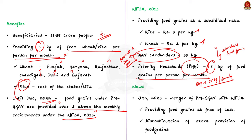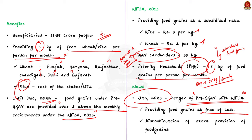Such families also received extra food grains under PMGKAY. This distribution arrangement existed until December 2022. However, in January 2023 the Central Government merged the PMGKAY with the NFSA. So now the AAY cardholders and Priority Households receive their entitlements free of cost — they don't need to pay even the subsidized rate. Note that the extra provision of food grains earlier granted under PMGKAY has been stopped, but they will receive their already existing entitlements free of cost. To sum up: under PMGKAY, the Central Government currently provides 35 kg of free food grains to AAY cardholders and 5 kg of free food grains per person per month to Priority Households.